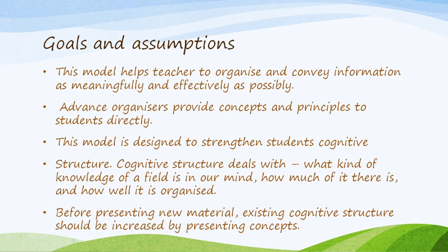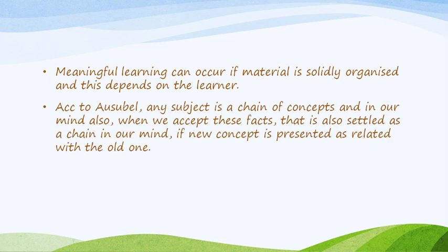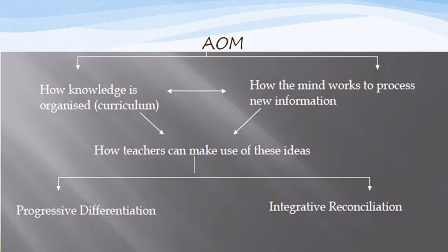We have to connect the existing cognitive structure with new materials. Before that, we stretch the advanced organizer to link new and old materials. Any subject is a chain of concepts, and we need to fit new learning into that chain. In the advanced organizer model, there are two basic things: how to organize knowledge and how to process it in our brain. The teacher tells students how to organize content and keeps two principles in mind: progressive differentiation and integrative reconciliation.